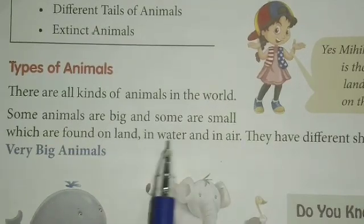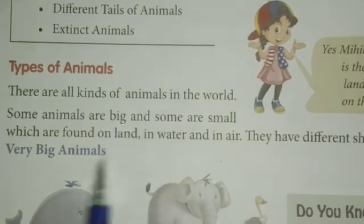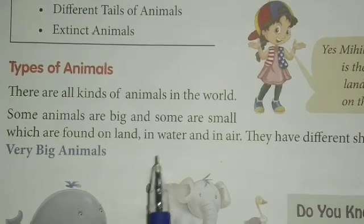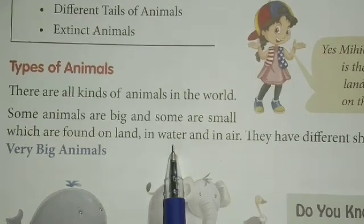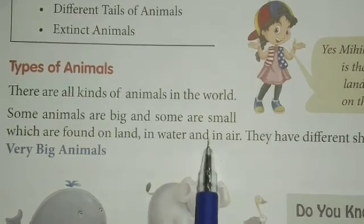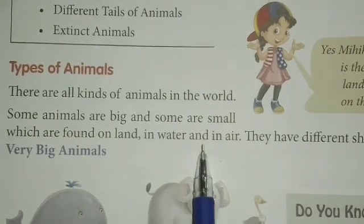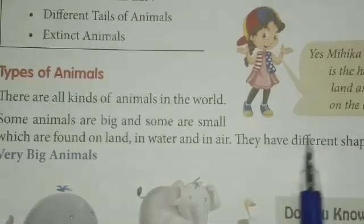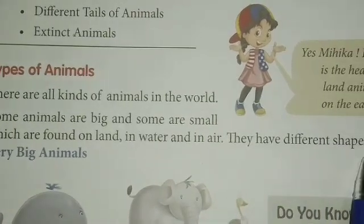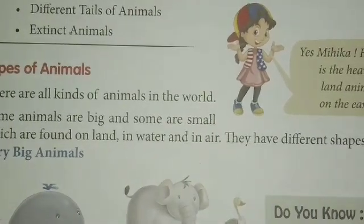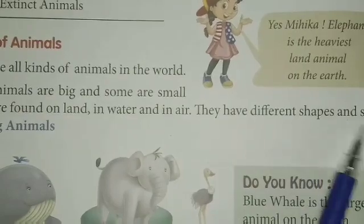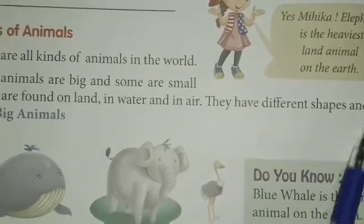जो animals हमें कहां मिलते हैं — which are found on land, धरती पे मिलते हैं; in water, पानी में भी; and in air, हवा में भी। ठीक है, they have different shapes — उनकी different shape रहती हैं — and size.